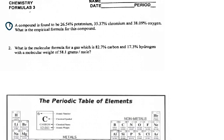A compound is found to be 26.54% potassium, 35.37% chromium, and 38.09% oxygen. What is the empirical formula? The empirical formula is the most reduced ratio of atoms, so that's what we're going to look for.